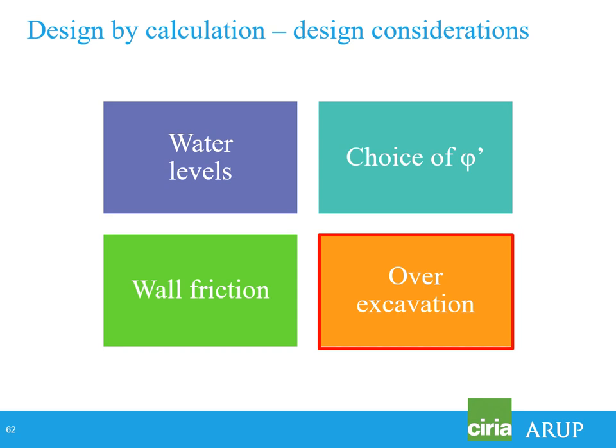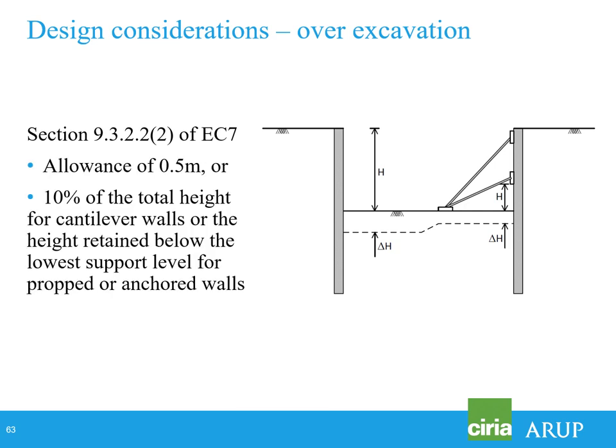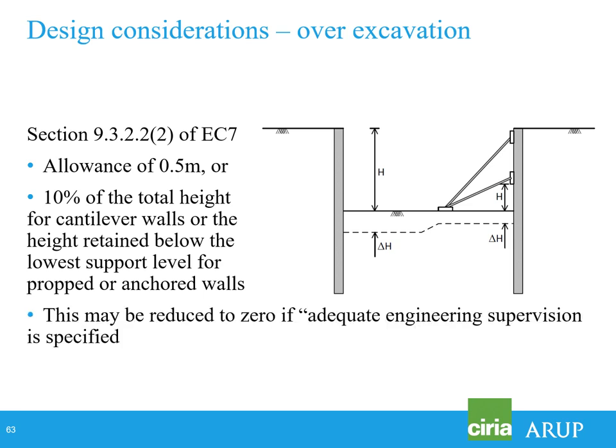Finally, over-excavation. The clause in Eurocode 7 states you should allow for half a metre of accidental over-excavation or 10% of the total height limited to half a metre. There's a get-out clause stating this may be reduced to zero if adequate engineering supervision is specified, and as a result every design has always had adequate engineering supervision and zero accidental over-excavation. We felt zero is extremely hard to achieve, so we suggested that even with best endeavours the accidental over-dig should be a minimum of 0.1 metres — more conservative than the Eurocode.